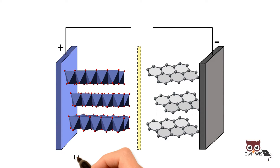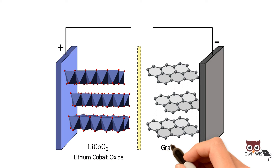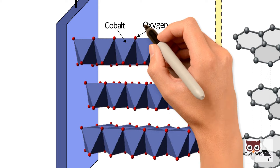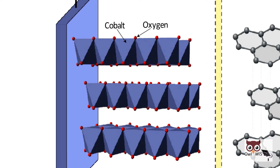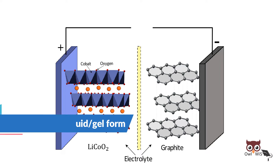The battery consists of a lithium cobalt oxide cathode and a graphite carbon anode. Cobalt and oxygen atoms bond to form an octahedral structure, and the lithium element is placed between the two cobalt oxide layers. The electrolyte is a lithium salt in liquid or gel form.